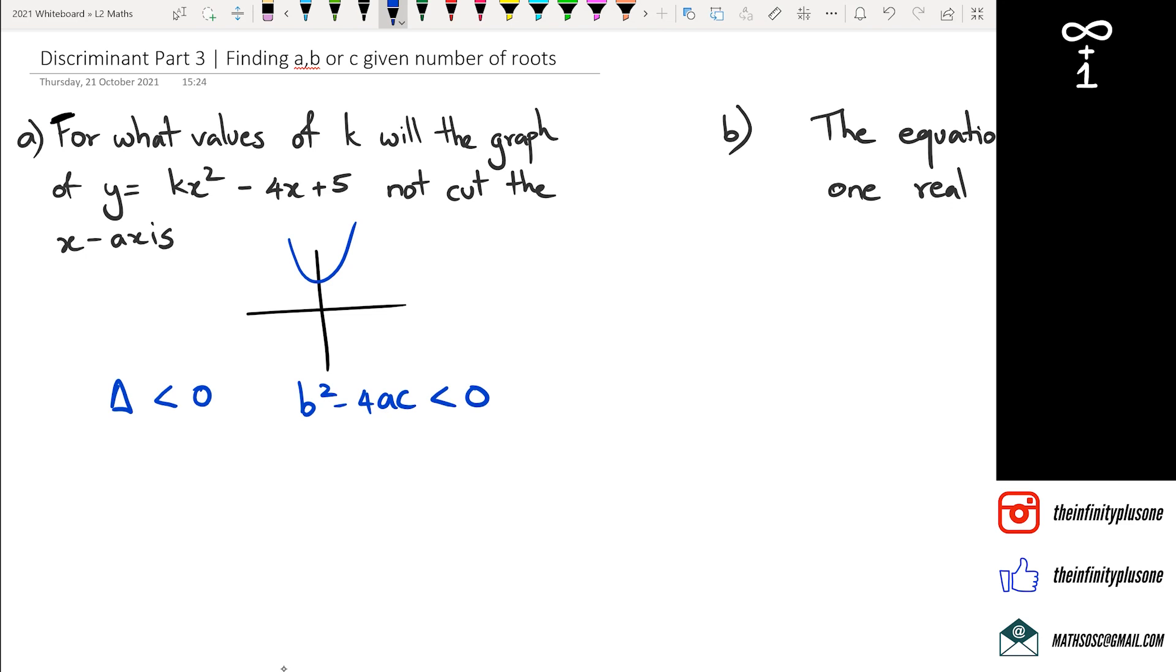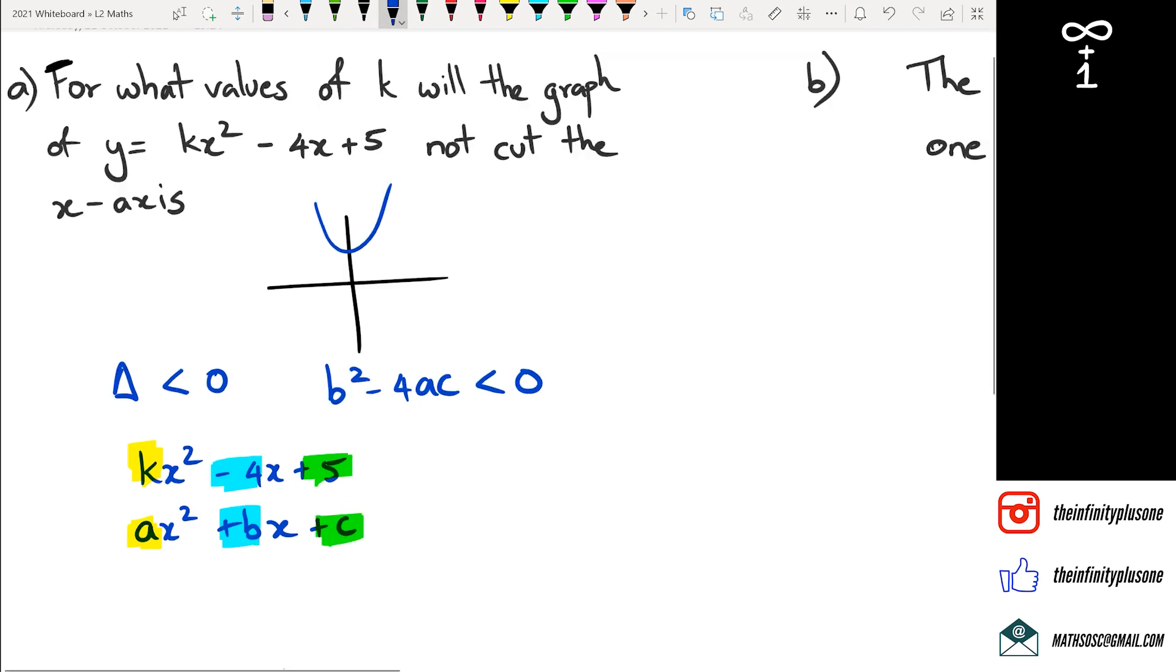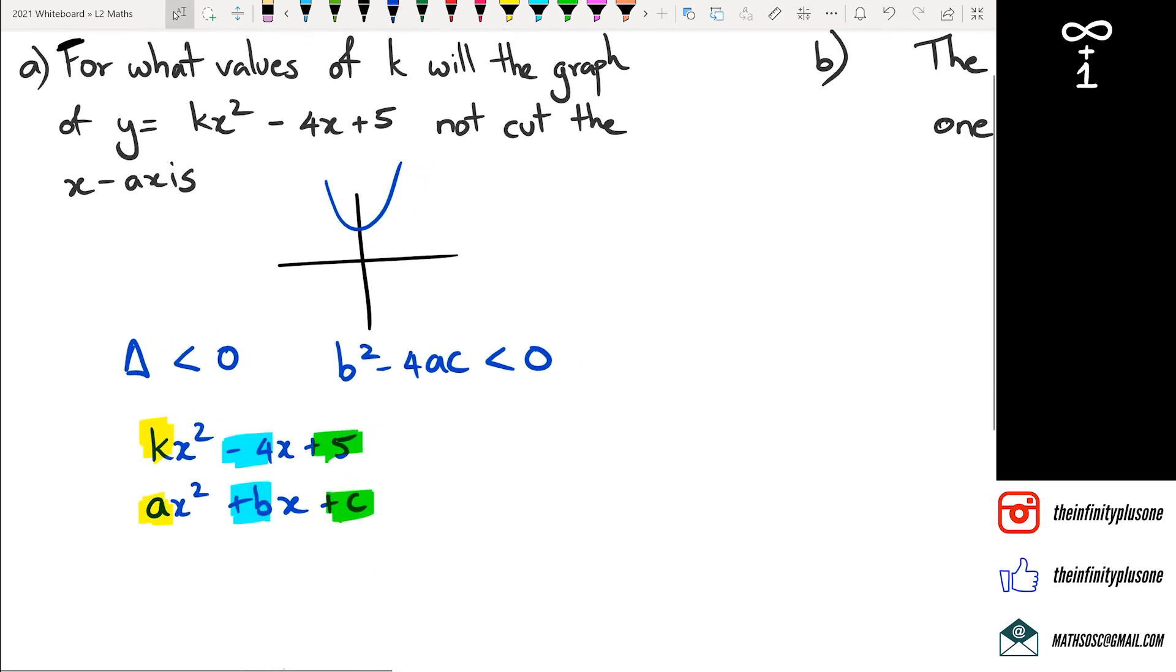So now what we're going to do is we're going to actually get our values for a, b, and c. So kx squared minus 4x plus 5 is our quadratic equation. We've got ax squared plus bx plus c. And what we can see is that a is equal to k, negative 4 is b, and c is equal to 5. So now I need to substitute b squared minus 4ac as less than 0. So I've got negative 4 squared minus 4 times k times c, which happens to be 5. And all of that is less than 0.